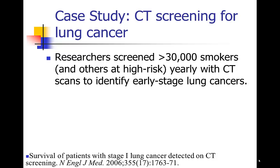It's controversial, though, because some people believe that what you're identifying in most cases — when identifying very early cancers — are cancers that actually would not have gone on to kill the person or even affect their lives, since they're very slow growing. So you may end up doing some over-screening and over-treating. There's a lot of controversy about this technique.